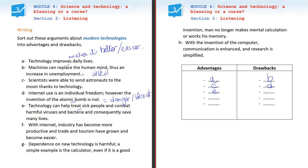Next one, F: 'With the Internet, industry has become more productive and trade and tourism have grown and become easier.' So industry is more productive — more production. Trade — in Arabic, tijara — and tourism have grown, they become bigger and bigger. So all these are positive aspects. F is an advantage.